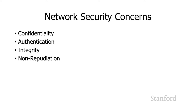You'll recall from the last lecture, we talked about four different network security concerns. Confidentiality — making sure that our communications are confidential and nobody is able to eavesdrop. Authentication — being able to determine that the person who we're talking to is who they say they are. Integrity — making sure that our messages aren't tampered with. And non-repudiation — being able to determine whether or not somebody actually carried out a particular action in a way such that they can't repudiate it. The mechanisms we're going to be talking about now are going to take care of these different problems.